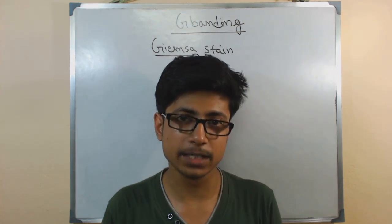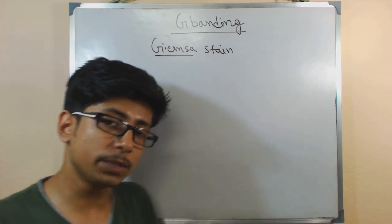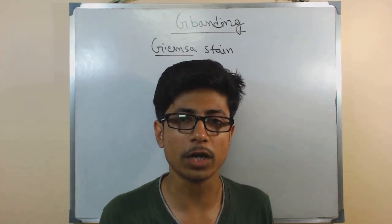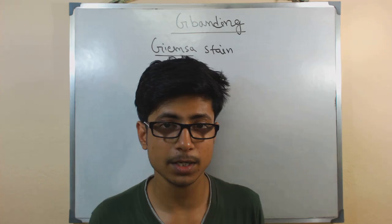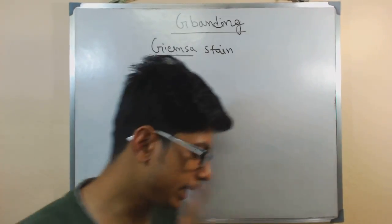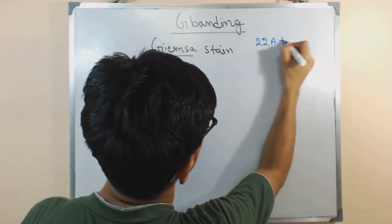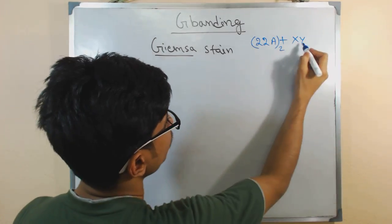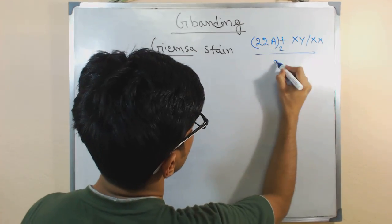Except for that, if you look at other purposes of Giemsa staining, the most important purposes are that we need this staining for understanding if there is any structural problem with the chromosome. Because let's say in our body, in the human body, we have 23 pairs of chromosomes—22 pairs of autosomes plus one, so this is a pair, then plus one XY or XX which is a sex chromosome.